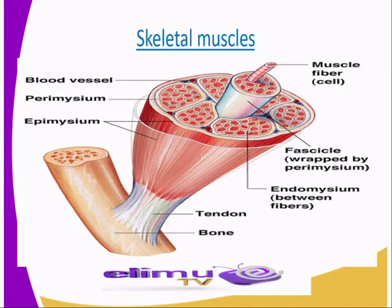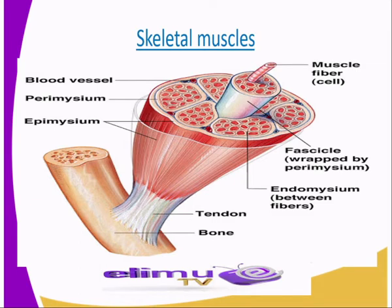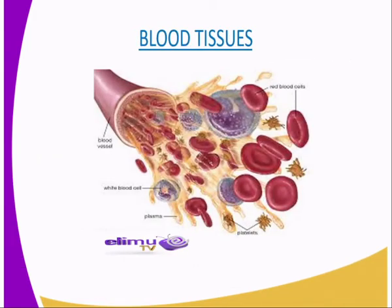We still have the muscle fibers, which are made up of connective tissues. We have the fascicles, which are wrapped by the perimysium, and underneath we have endomysium — normally the endomysium is in between fibers, that is the collagen fibers. We have the tendons, which are attached to the bone and allow you to make movements. In summary, it is a bundle of sheets of elongated cells with fibers that contract and relax, bringing about movement.